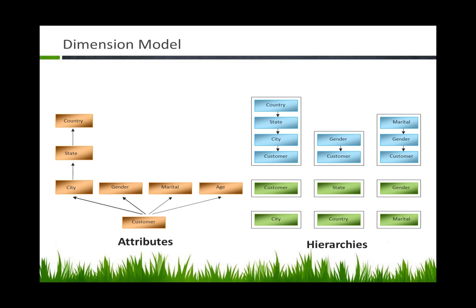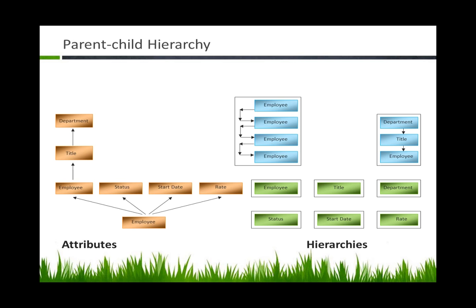You've got an attribute — it's a particular thing that describes a customer. A hierarchy is a collection of attributes that you actually use to navigate. So we talk about attributes and hierarchies. If we take it one level deeper, we've got the hierarchies that we created yesterday. We created a flat hierarchy — gender is really a flat hierarchy.